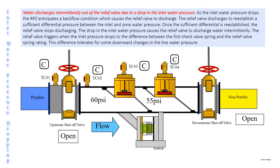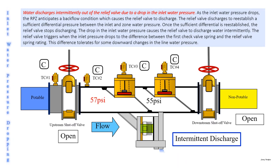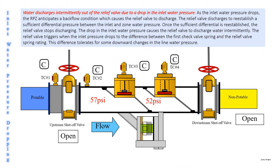Water discharges intermittently out of the relief valve due to a drop in the inlet water pressure. As the inlet water pressure drops, the RPZ anticipates a backflow condition which causes the relief valve to discharge. The relief valve discharges to re-establish a differential pressure between the inlet and zone water pressure. Once the differential is re-established, the relief valve stops discharging. The relief valve triggers when the inlet water pressure drops to the difference between the first check valve spring and the relief valve spring rating. This difference tolerates some downward changes in the line water pressure.